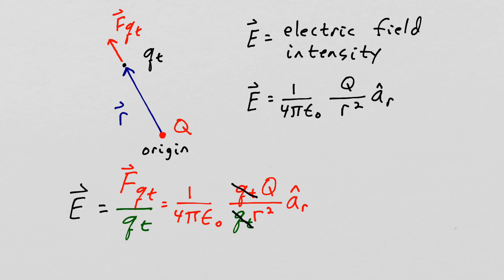This electric field intensity is a function in space that tells us about the influence of the charge Q at the origin.